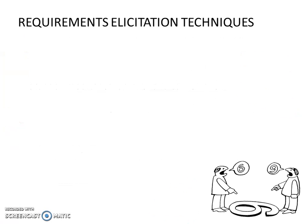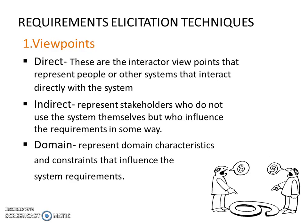Now let's look at requirements elicitation techniques. There are different requirements elicitation techniques. The first one we will look at is viewpoints. There are many viewpoints: direct, indirect and domain viewpoints. Direct viewpoints are those where the interactor will give the requirements. Interactors are those people who will directly interact with the system.